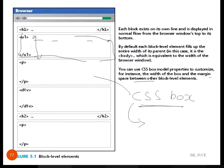By default, data just flows in the normal way — whenever a new block is started, a new line is taken and the data is represented. No two tags will exist within the same line. For example, after a paragraph tag, a division tag cannot come on the same line — it will immediately go to the next line and form a new block. That is how block level elements work.